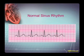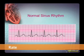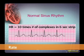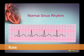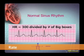Before we know what is abnormal, we need to know what is normal. Let's be systematic. First, what is the rate? We could count the number of complexes in a 6-second strip and multiply by 10 to get our heart rate. But this is not a 6-second strip. No problem — count the number of big boxes between R waves, divide that number into 300, and that is the heart rate.